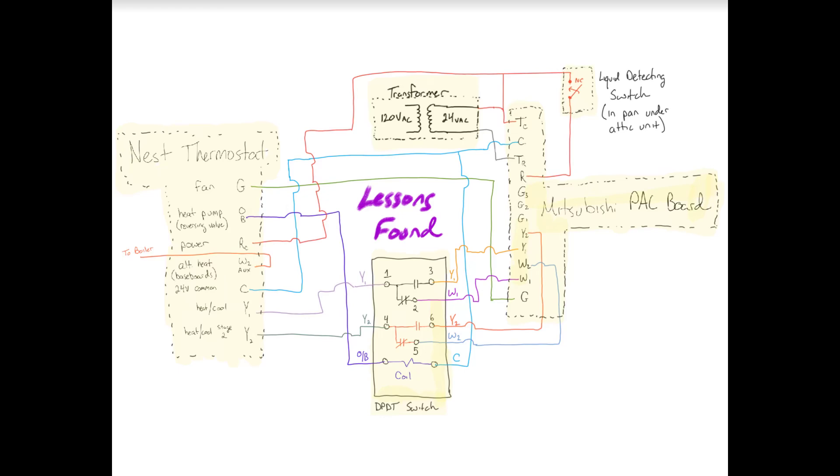So I'll kind of discuss how this is starting with the thermostat. So the Nest thermostat, when you pull it off the wall, it's very clearly labeled. The things we're going to be using are G, OB, RC, W2 aux, C, Y1, and Y2. Your W2 line, which is your aux heat, is going to go to the boiler.